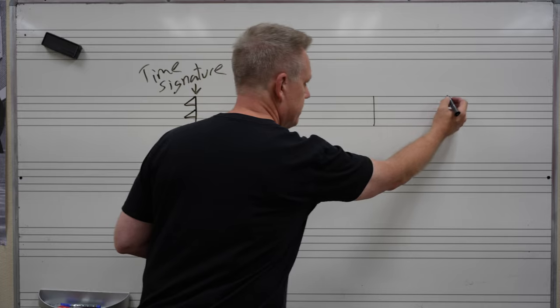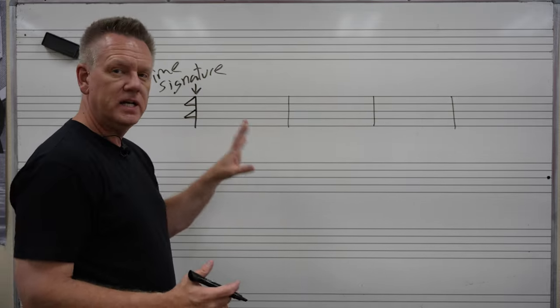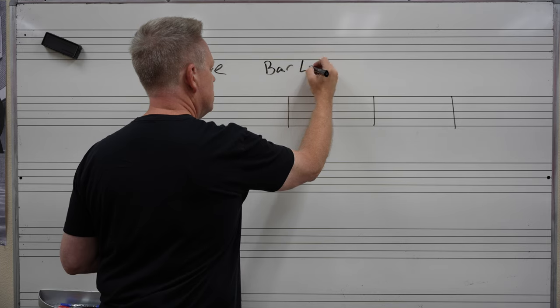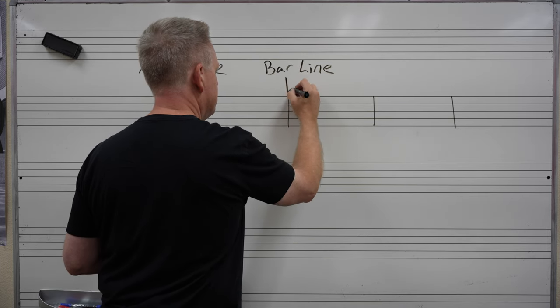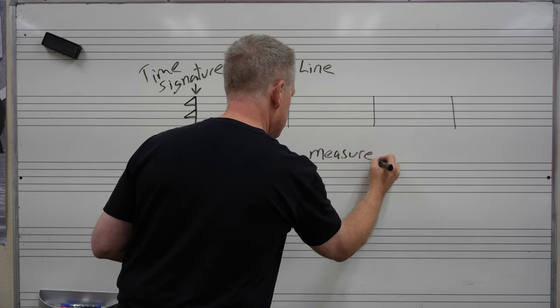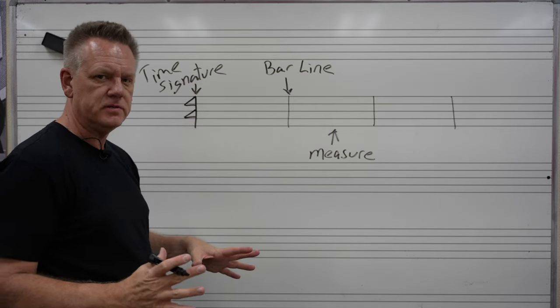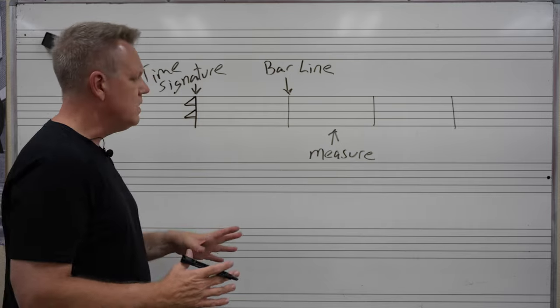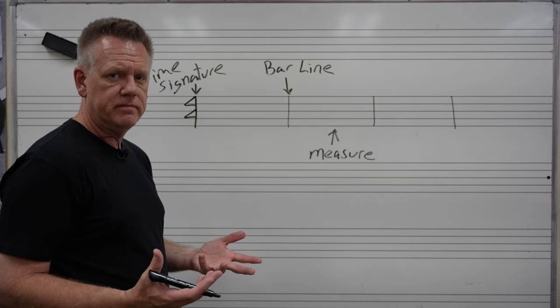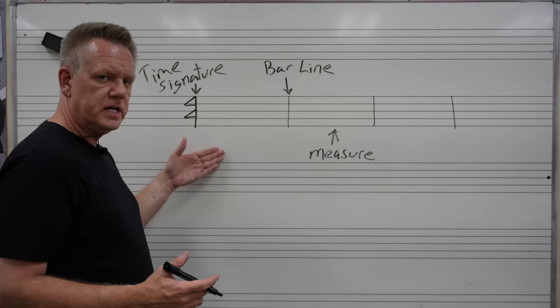That's another bar line. That's another bar line. So, in between each bar line is a measure. Bar line, measure. The bar line separates the measures. Now, how do we get music into there? Well, now we need to know what note durations are. What is a note duration? So, right here, I'm going to write a couple of note durations out.